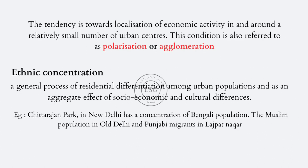This increase in population density is what we call concentration and centralization. One after-effect of such concentration is the tendency towards localization of economic activity in and around a relatively small number of urban centers. This condition is also referred to as polarization and agglomeration. For example, in a city like Mumbai, many Malayalis coming together tend to mingle and form organizations — a Malayali samaj — in a particular area. That is what polarization means.